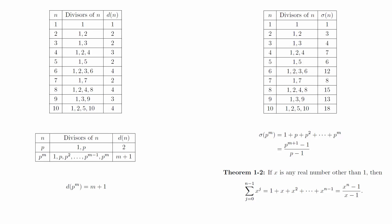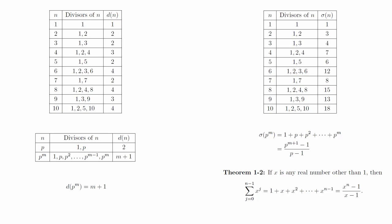Having calculated these values for powers of primes, the next obvious step is to compute them for arbitrary integers. Theorem 6-3 gives us formulas for computing both d and sigma given that we know its prime factorization.